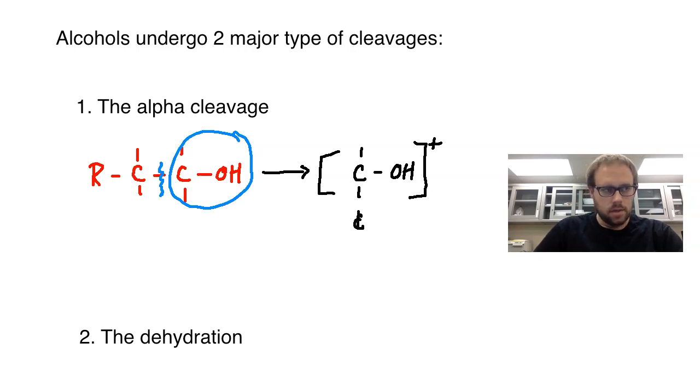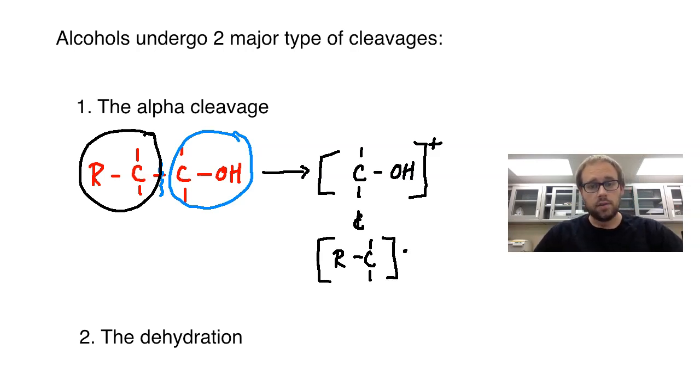And you will also have the R, this remaining portion which we have up here, that portion is going to be a radical portion. And that is an alpha cleavage. So the charged part hitting the detector, you could see would be right here with the positive cation. And that is going to result in giving you peaks.